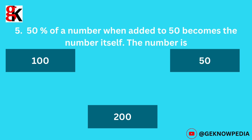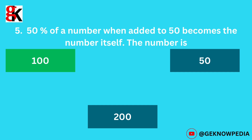Fifth question. 50% of a number when added to 50 becomes the number itself. The number is: 100, 50, or 200. The correct answer is 100.